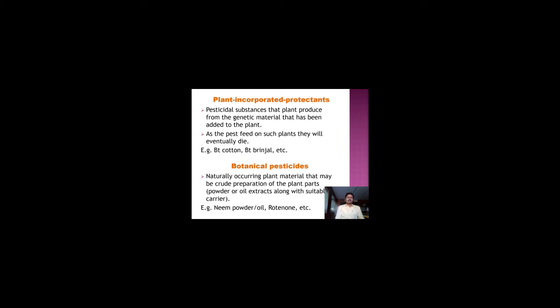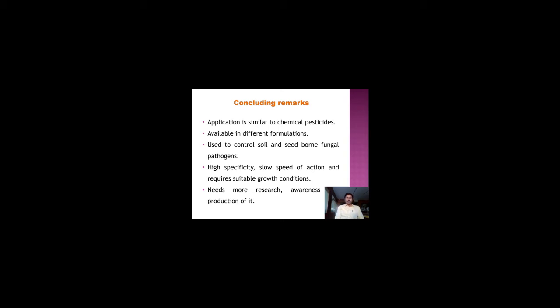Botanical pesticides are the next category, where naturally occurring plant material — crude preparations of plant parts like powder or oil extracts along with a suitable carrier — can be used to control pests and pathogens. Examples include neem powder, neem oil, rotenone, etc. In summary, biopesticides are applied similarly to chemical pesticides, such as spraying or drenching, and are available in different formulations such as powder, liquid, gel, and others.